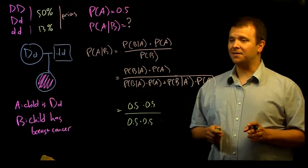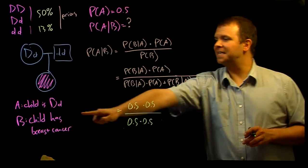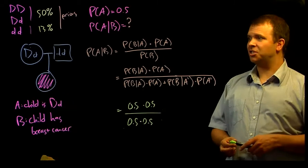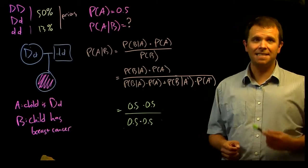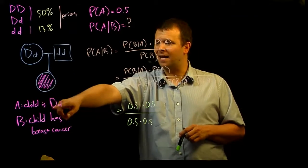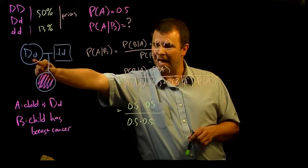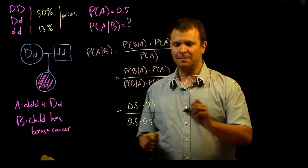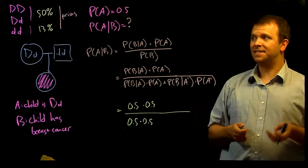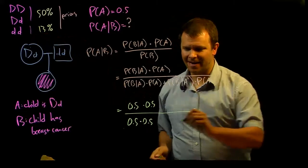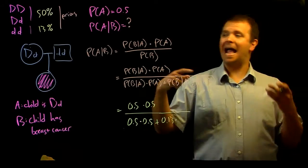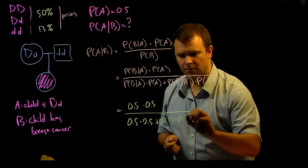What is the probability that a child gets breast cancer given that she does not have the heterozygous genotype? Well, the other option for this child's genotype is the homozygous recessive. The child can either be a heterozygote big D little d, or they can be a homozygote little d little d because they got the little d from their father and the little d from their mother. And the probability of them developing breast cancer if they have the homozygous recessive genotype, we also know already. It's 13% or 0.13 and the probability that they have that homozygous recessive genotype is 0.5.